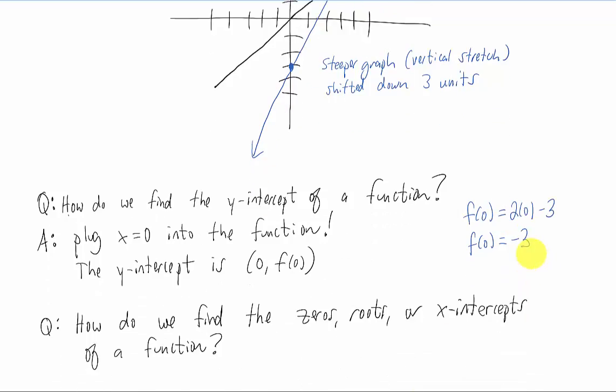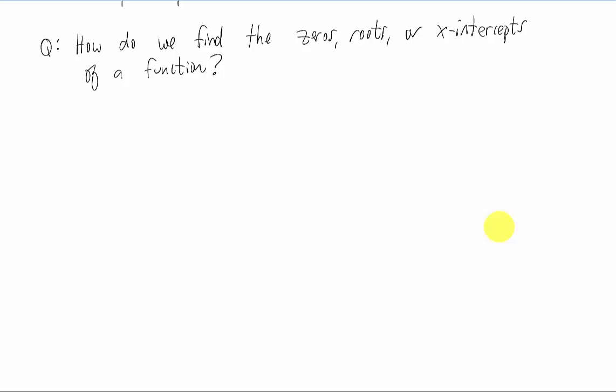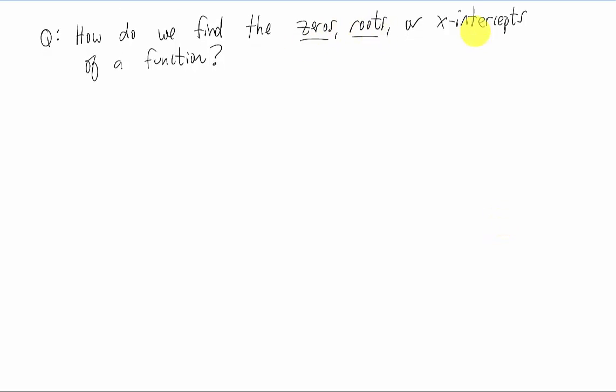Okay, here's another question we're going to ask of a lot of functions. How do we find the zeros, the roots, or the x intercepts of a function? Now these three words are all different ways to say the same thing. All of these words indicate where a graph crosses the x axis.